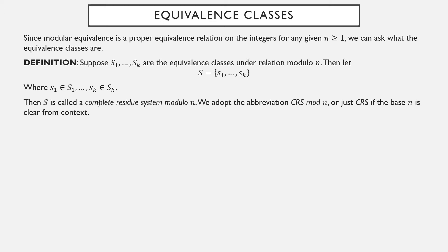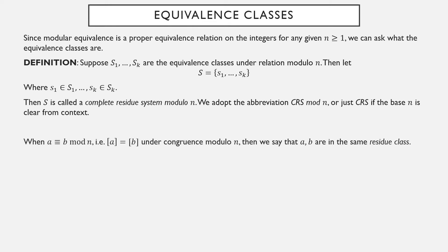We haven't formally established that there are finitely many equivalence classes, but we will do so very shortly. A complete residue system modulo n is abbreviated as CRS mod n, and that's frequently how I'll say it. When a is equivalent to b modulo n — in other words they share the same equivalence class under congruence modulo n — we say that a and b are in the same residue class, which is a specialized term for equivalence classes under this relation.